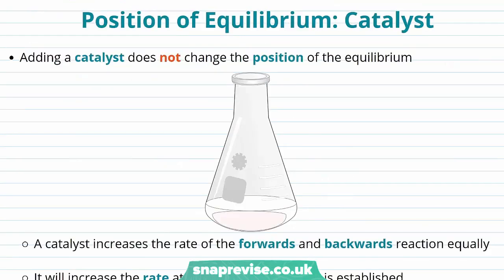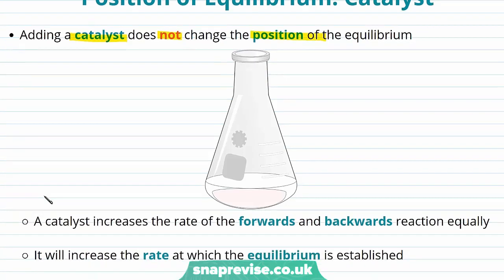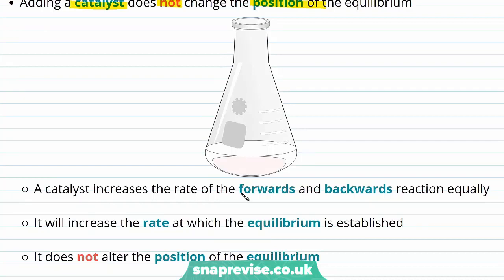Adding a catalyst does not change the position of equilibrium — it does not move to the left or to the right. Rather, a catalyst increases the rate of both the forward and backward reactions equally. It will increase the rate at which equilibrium is established, but does not alter the position of the equilibrium.